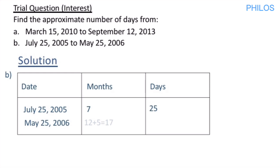Now find the difference — ending minus starting. The ending date is placed at the bottom and the starting at the top, so we take bottom minus top. For months: 17 minus 7 = 10. For days: 25 minus 25 = 0.